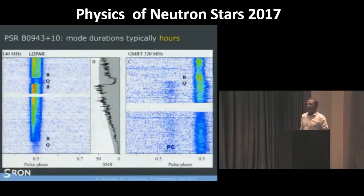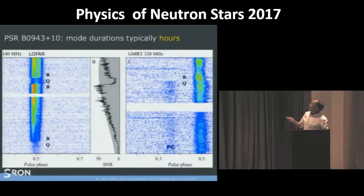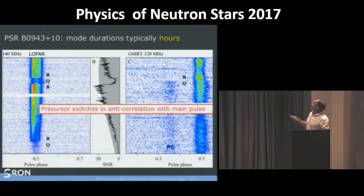Just to show you the types of moding. Here is B0943, it is LOFAR, it is in a bright mode, suddenly quiet and unbright. This is GMRT, you see again, here is the quiet mode, bright mode. The interesting thing is there is also a precursor in front of this main pulse. And that is correlating in anti-correlation with the main pulse. So when the main pulse is bright, the precursor is off and is on when the bright main pulse is quiet.